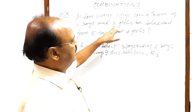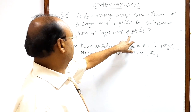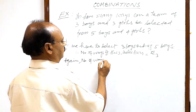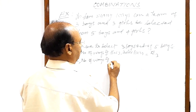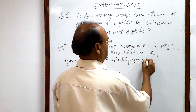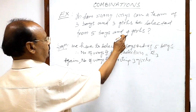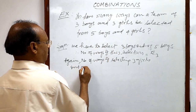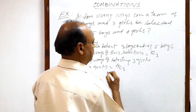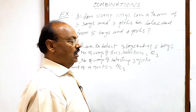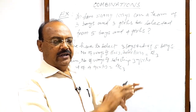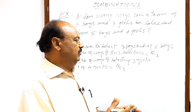Again, we have to select three girls out of four girls. So the number of ways of selecting three girls out of four girls is 4C3. By the fundamental principle of counting, the entire team can be formed in 5C3 into 4C3 ways.